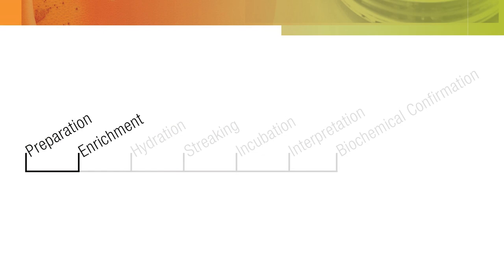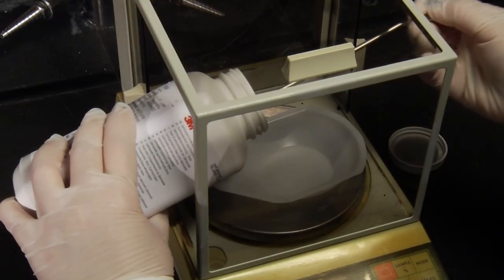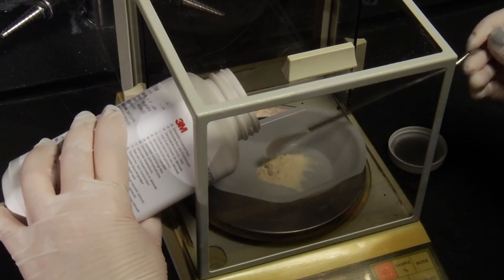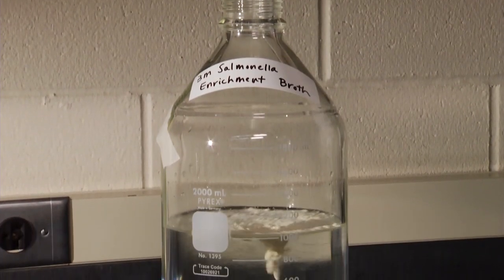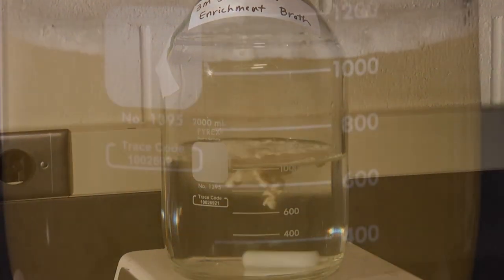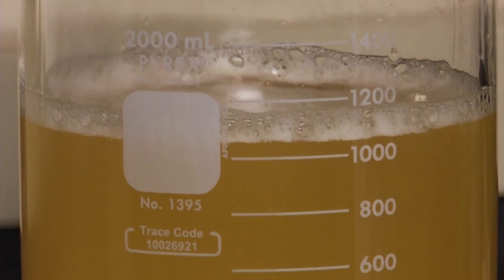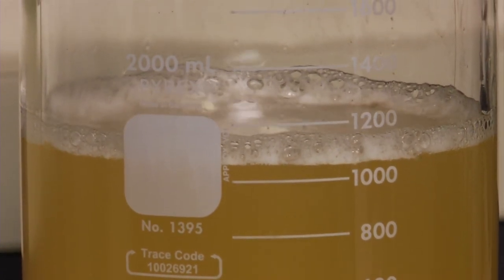The next step is the enrichment procedure. In order to prepare 1 liter of 3M Salmonella enrichment base, weigh 37 grams of dehydrated base powder and add it to 1 liter of water. Follow the product instructions to mix, dissolve, and sterilize the media.